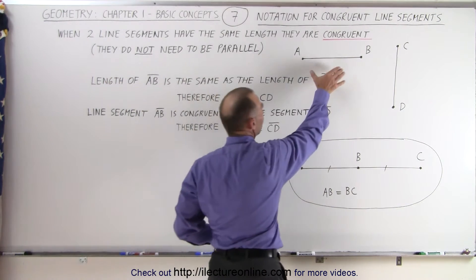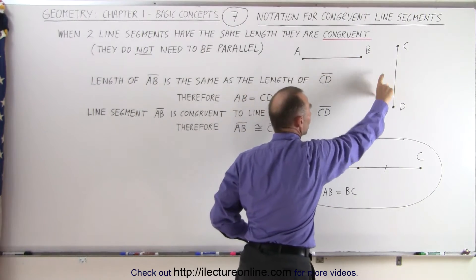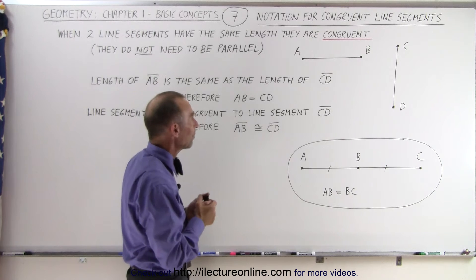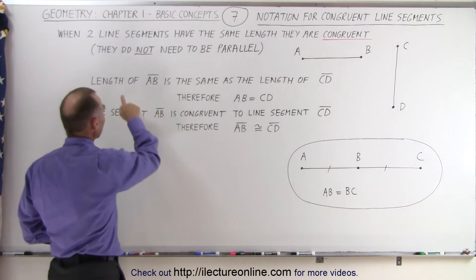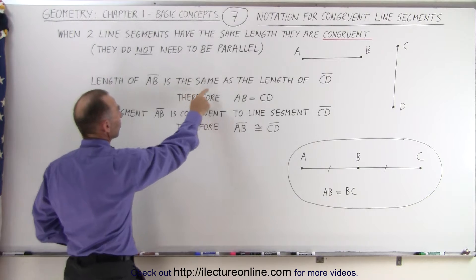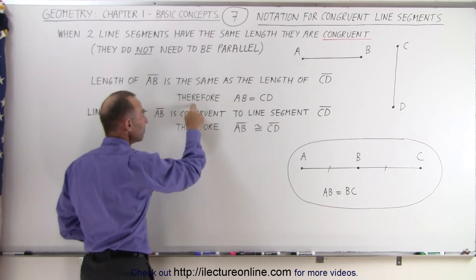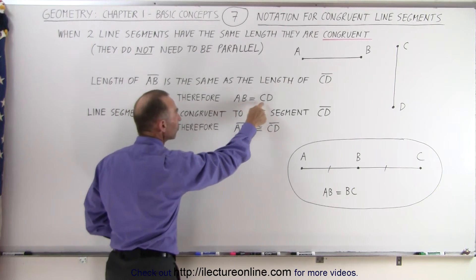So here we have a line segment AB and a line segment CD. By inspection, you can see they appear to have the same length. If the length of line segment AB is the same as the length of line segment CD, we can then claim that AB equals CD.